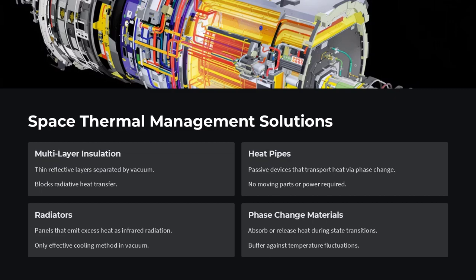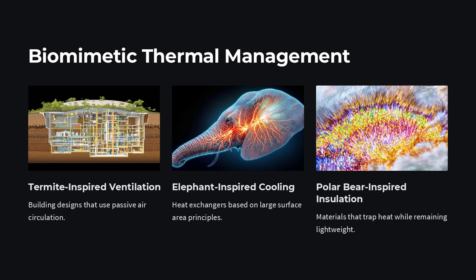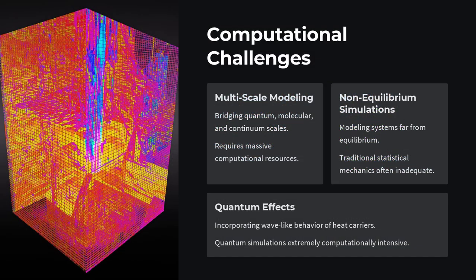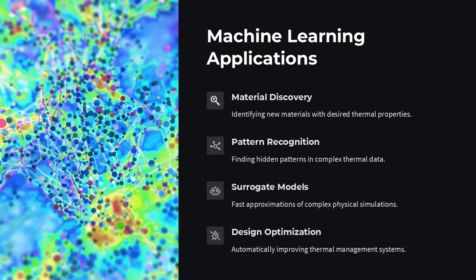So how do materials conduct heat in ways that contradict Fourier's law? Because Fourier's law is a classical approximation best suited for macroscopic, steady-state, homogeneous systems. In the real world, especially at the frontiers of material science, we deal with non-equilibrium conditions, nanoscale confinement, ultra-fast phenomena, and quantum effects. These domains reveal anomalies not because the materials are broken, but because our traditional equations are too simple to capture their complexity.